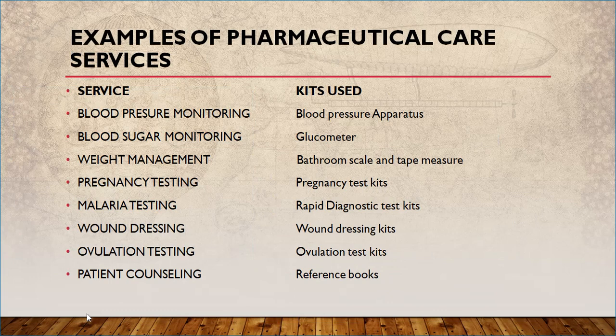Let's look at services we can render in our pharmacy to help boost pharmaceutical care. One is checking blood pressure using a blood pressure apparatus or electronic blood pressure machine. Another is monitoring blood sugar using a glucometer. To check patient weight, we use a bathroom scale and tape measure. For pregnancy testing we use pregnancy test kits, and for malaria testing we use rapid diagnostic test kits. We also offer wound dressing using wound dressing kits, ovulation testing using ovulation test kits, and for patient counseling we use reference books — a common one being the BNF, the British National Formulary, which is different from the BP, the British Pharmacopoeia.